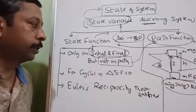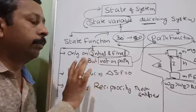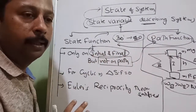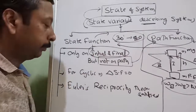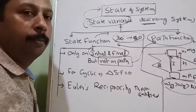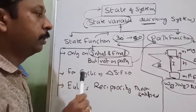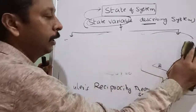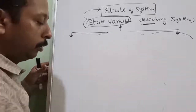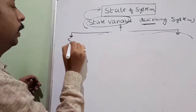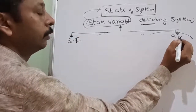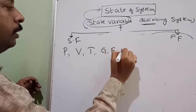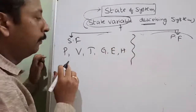The change in a state function going in a cycle will be zero — Euler's reciprocity theorem will be satisfied. This is information from another subject. Examples of state functions are: pressure, volume, temperature, Gibbs free energy (G), internal energy, and enthalpy. These are all examples of state functions.